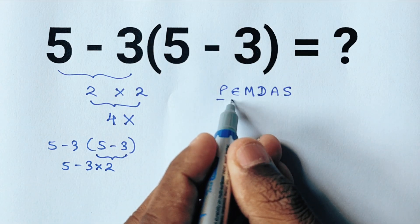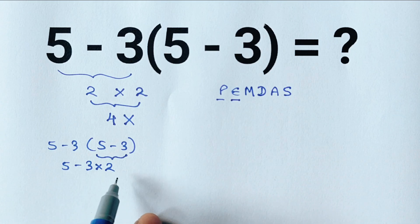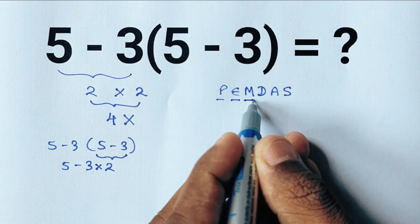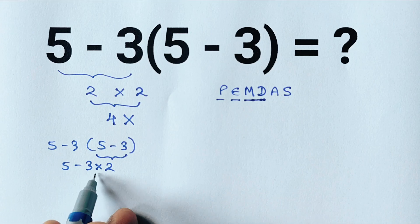Next we look for exponents but there are none in this expression. Then we handle multiplication and division, and here we have multiplication: 3 times 2 is 6.